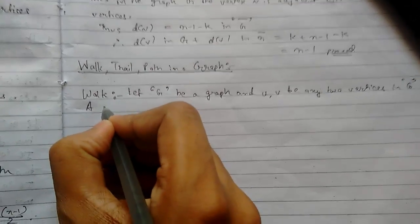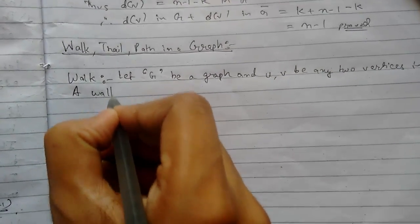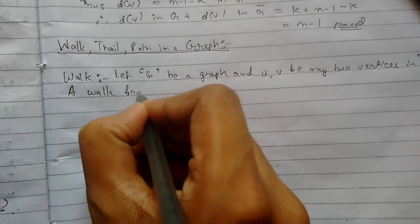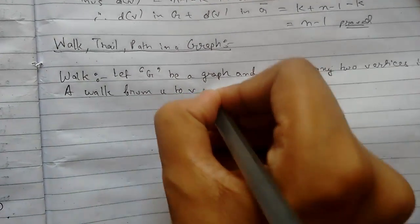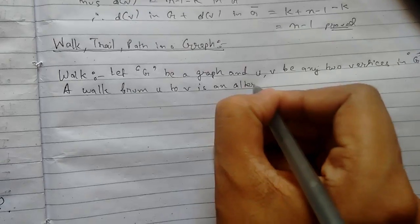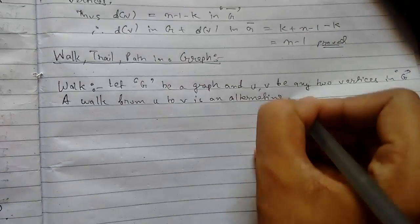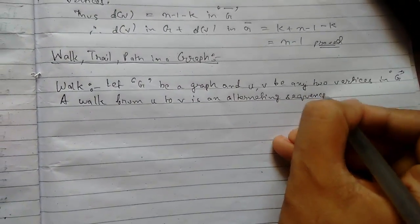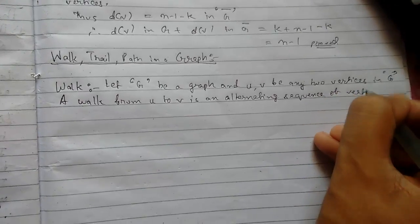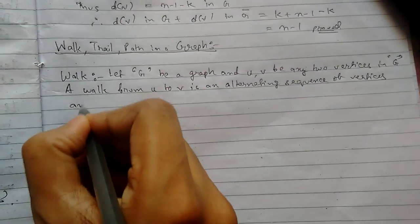A walk from u to v is an alternating sequence of vertices and edges.